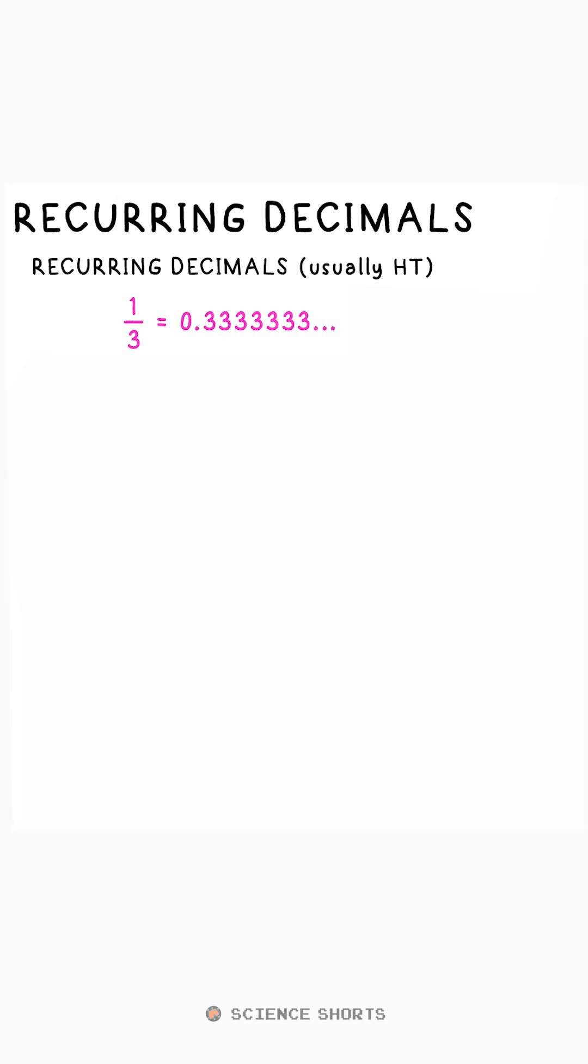In science, you would just round this to say 0.33 and write it as that. But in maths, we show that we have a recurring decimal by putting a dot above the three, showing the three repeats forever after that.